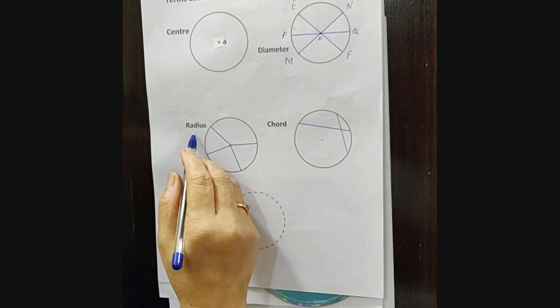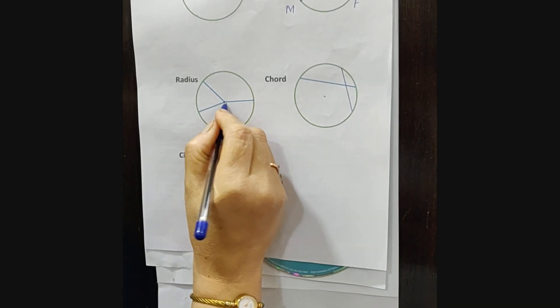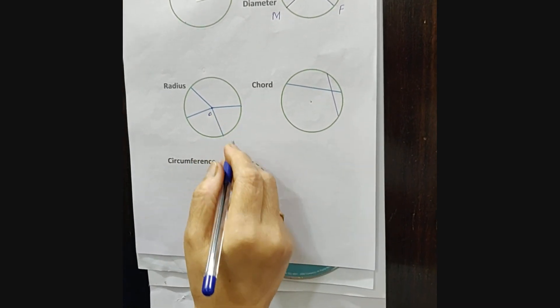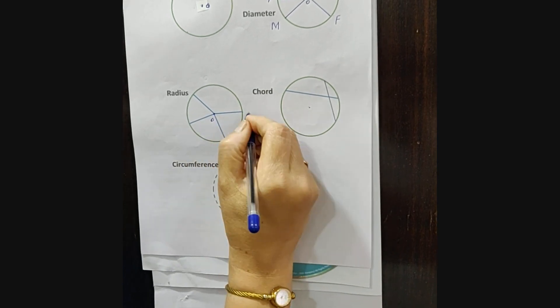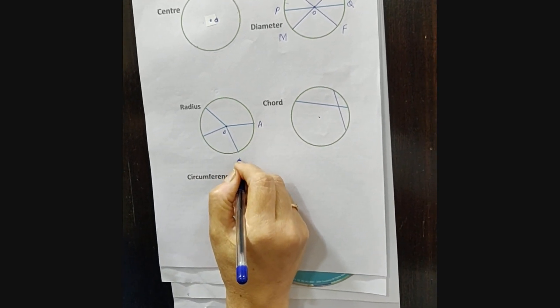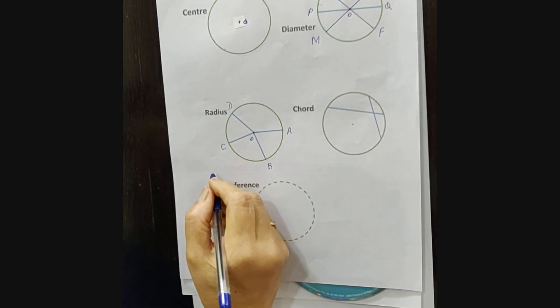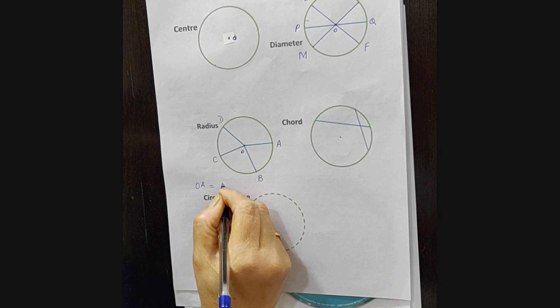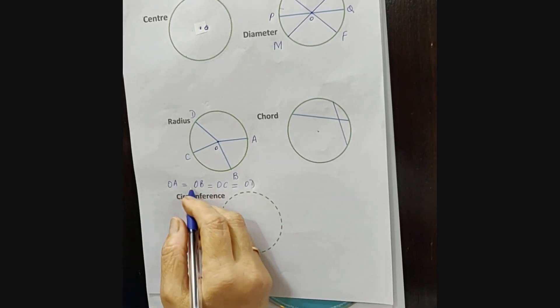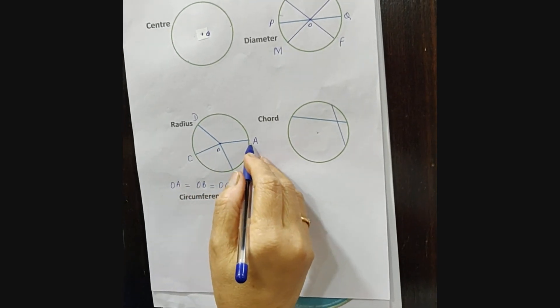Next comes radius. Radius is when we draw a line segment from the center to any point on the circle. Suppose this OA is a radius. The plural of radius is called radii. We can draw infinite radii on the circle. Here OA equals OB equals OC equals OD. All the radii have the same length because it is drawn from the center.